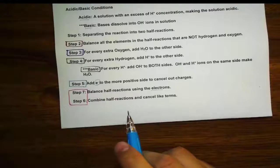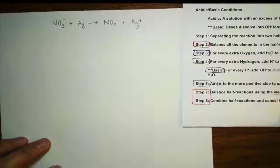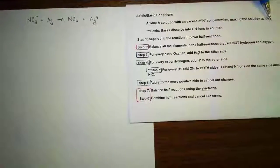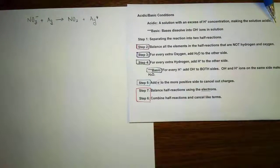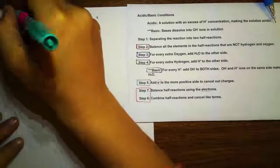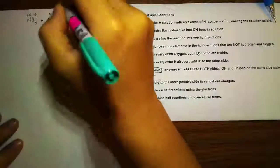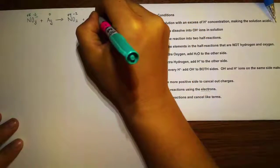Now let's do an example problem together. Notice how I color-code everything. Step 1 is always assigning the oxidation numbers first, because we need to do that before we can divide into half-reactions. So here I have: −2, +5, and on the other side: 0, −2, +4, and +1.